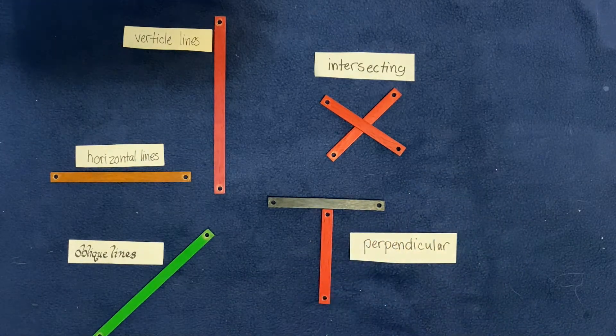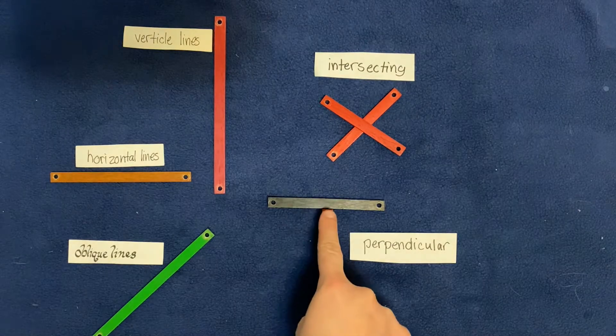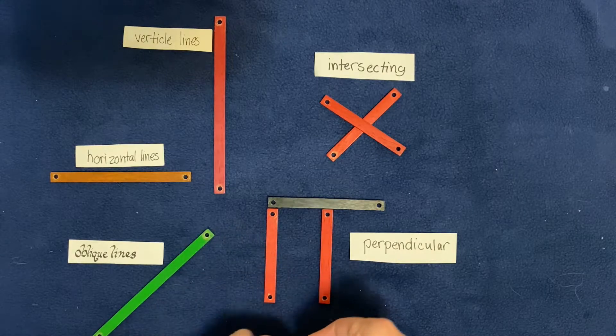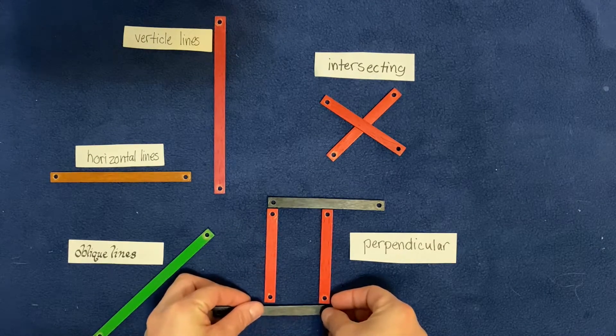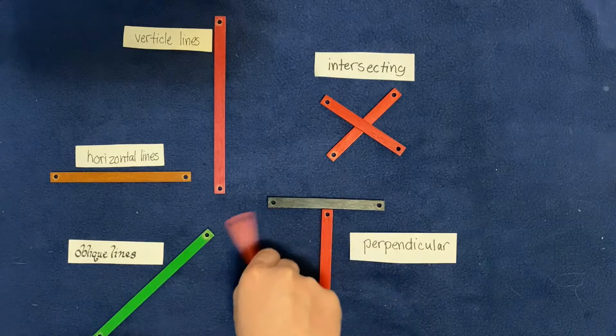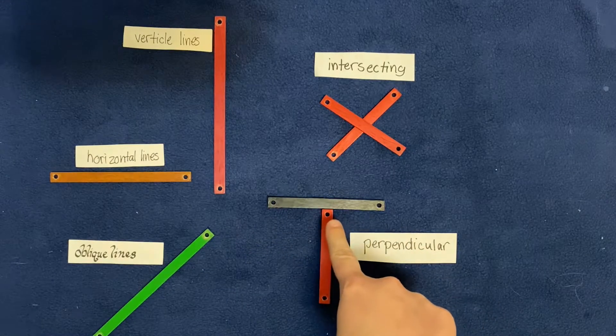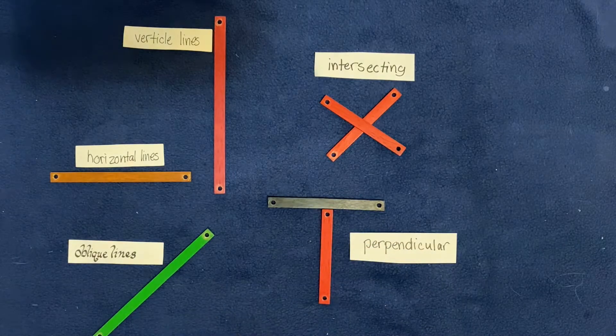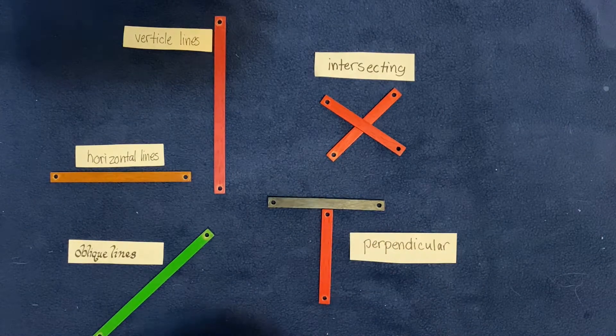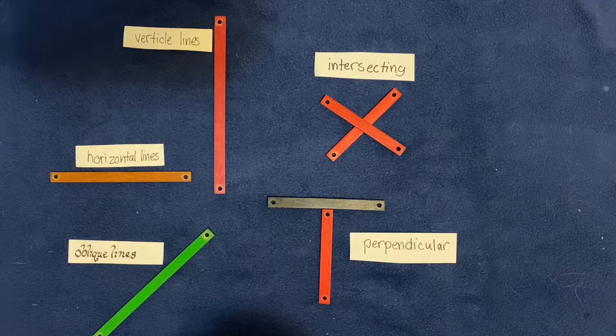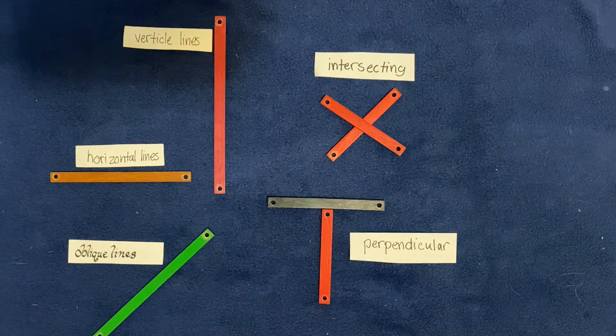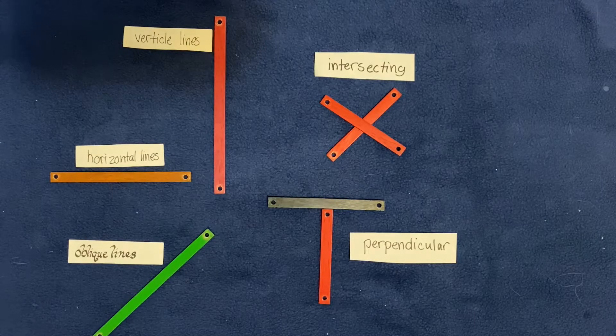You see how it makes almost like the corner of a rectangle? When two lines come together and make that perfect L in the corner, that's called a perpendicular line. For those of you who have had angles, it's coming together and it's making two right angles, okay.